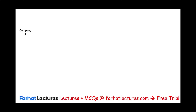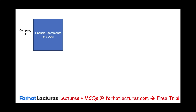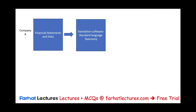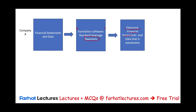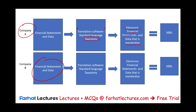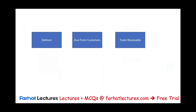Imagine we have Company A. They have financial statements and data that they need to submit to the SEC. They're going to take these financial statements and input them into — I'm just going to call this a translation software, though there's no such thing literally. They're going to tag them using certain taxonomy into a standard language, then turn them into electronic, standardized financial statements — and all of that gives us XBRL. Company B will do the same thing and also submit everything electronically in XBRL form.